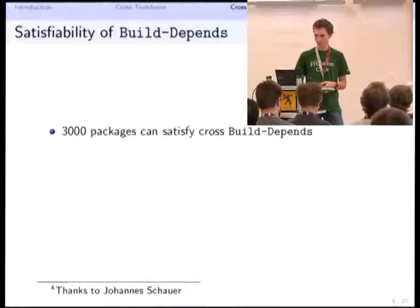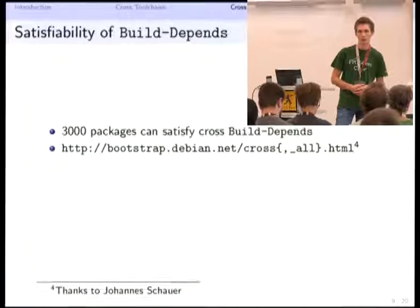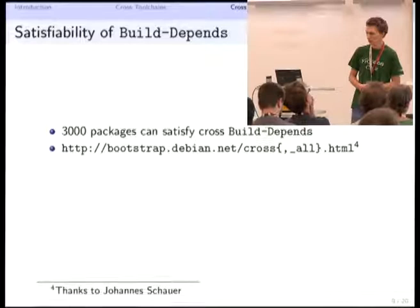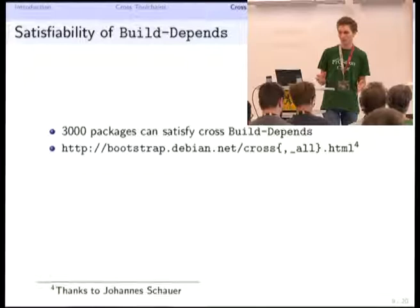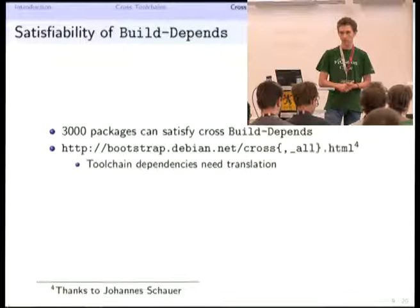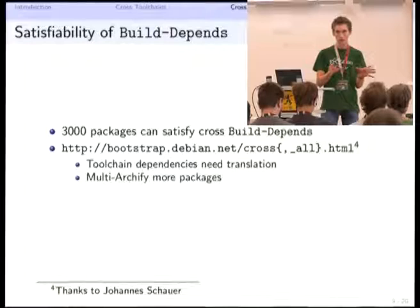There's a nice page generated by the botch tool of Johannes Schauer which displays problems about packages. If we try to get a big picture of the current problems, there are basically two things: cross-toolchain dependency translations, and the general need to multi-archify more things.